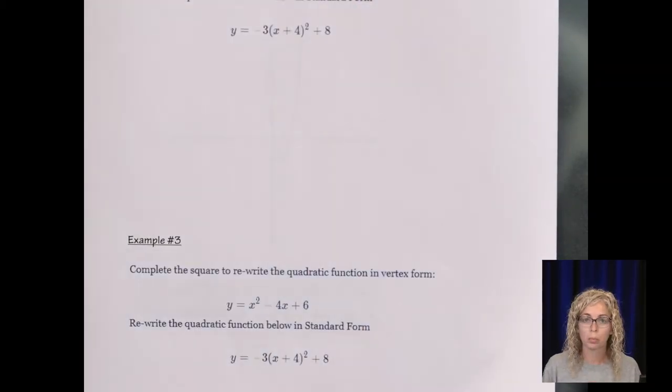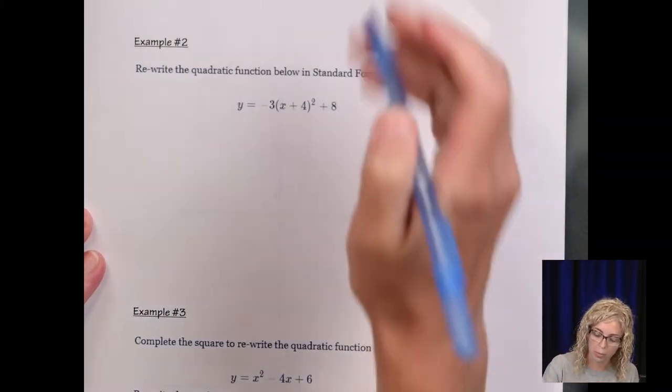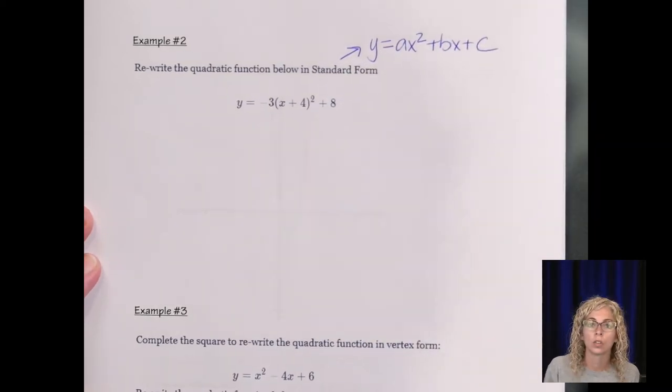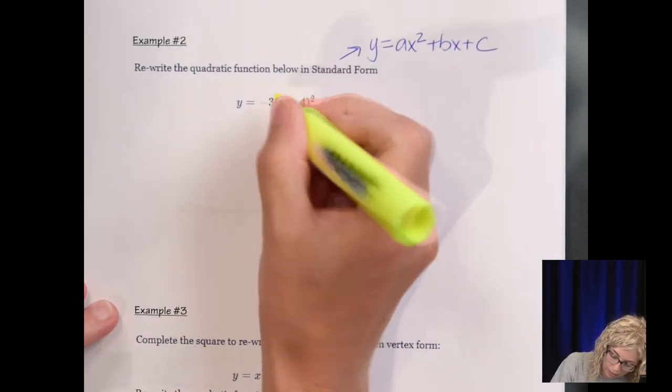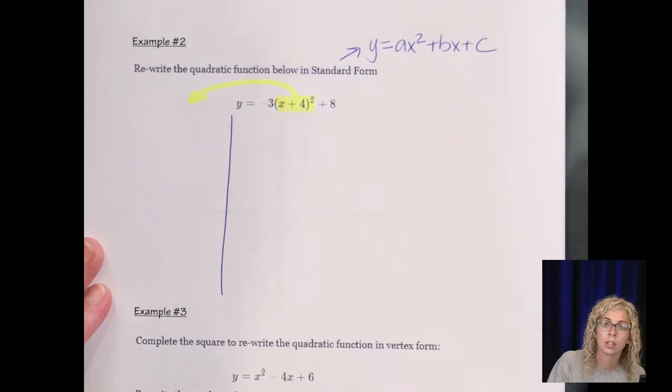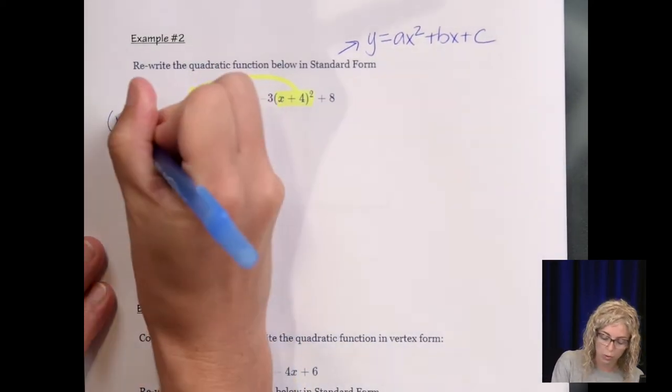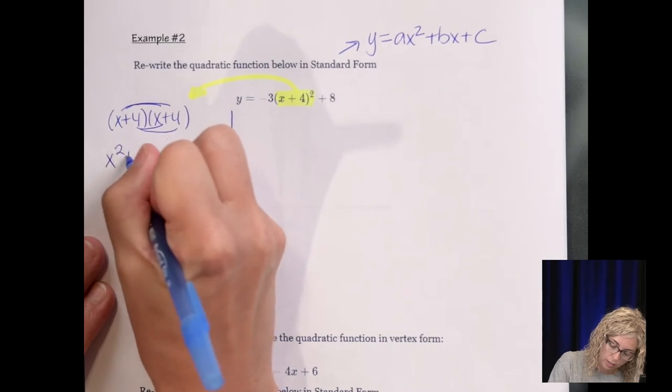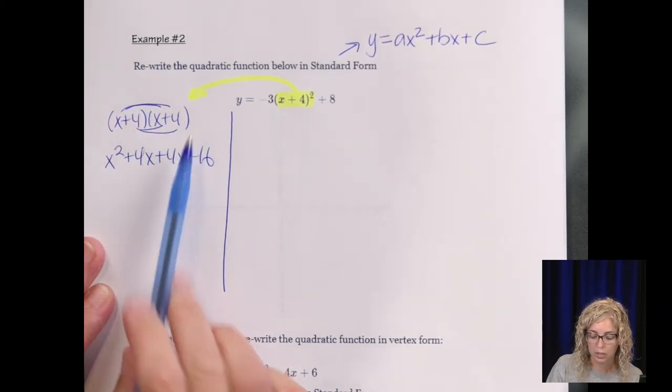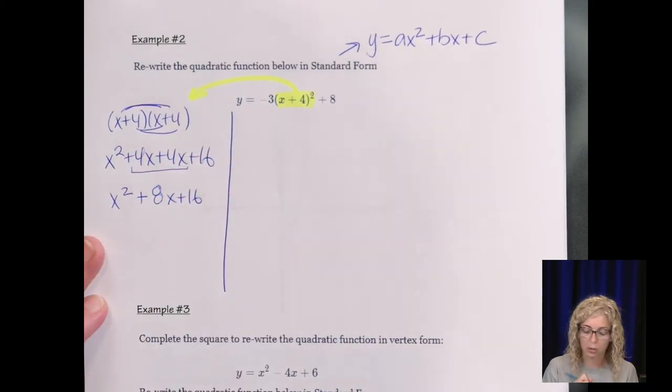And our next example, example 2, it says to rewrite the quadratic function in standard form. So remember, standard form is y equals ax squared plus bx plus c. So the first thing, anytime you have the square of a binomial, I like to do that off to the side. So we'll do that over here. I'll draw a line. So x plus 4 squared means x plus 4 times x plus 4. And we're going to just use the distributive property, or FOIL, if any of your teachers said that.